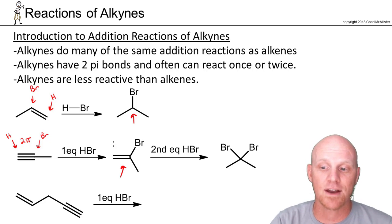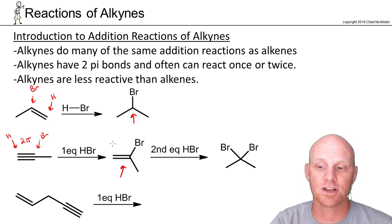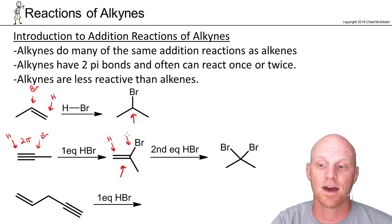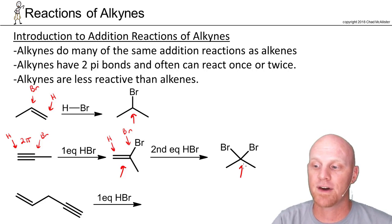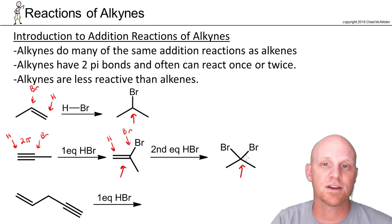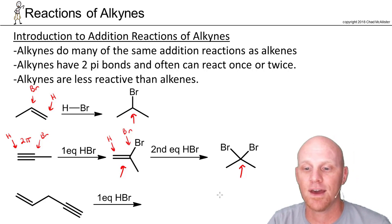But to that alkene you can add another equivalent of HBr, so you'll get another H adding to the less substituted side and another bromine adding to the more substituted side, and we'll now have added two equivalents, forming an alkane.